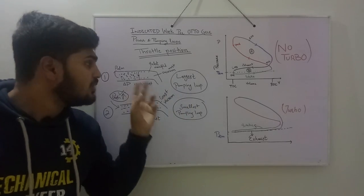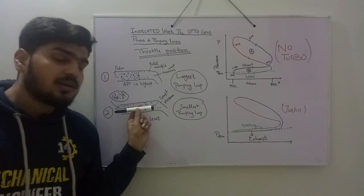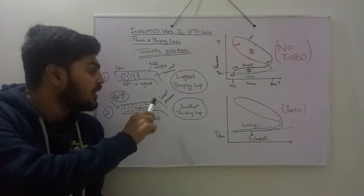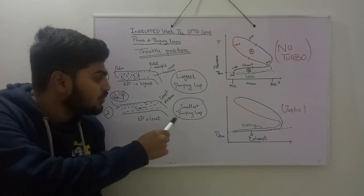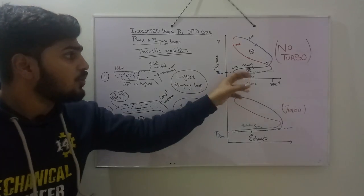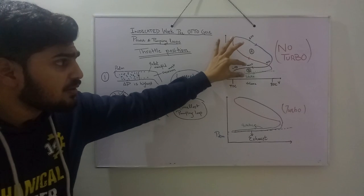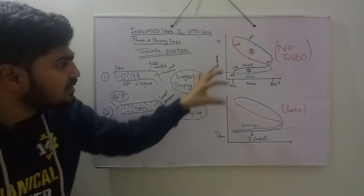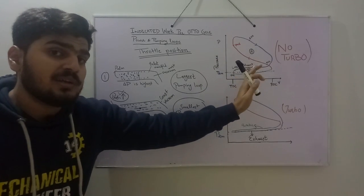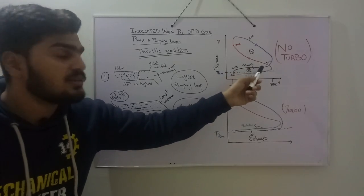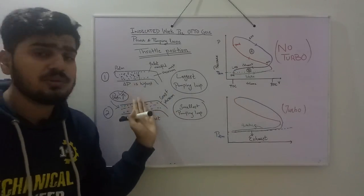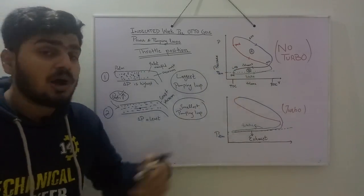With a closed throttle, the piston must do more work to induce the air-fuel mixture, making the pumping loop largest. At wide open throttle, the pressure difference is least, the intake manifold has minimal vacuum, and the piston does the least work to intake the mixture — so the pumping loop is smallest. However, you cannot completely eliminate the pumping loop in a naturally aspirated engine because throttle position is always varying.